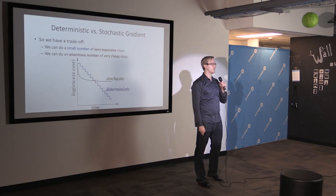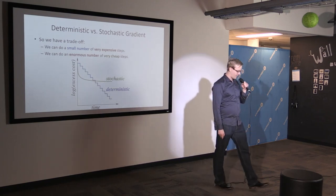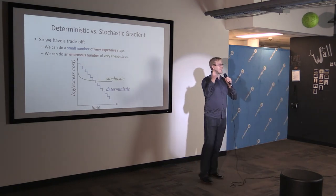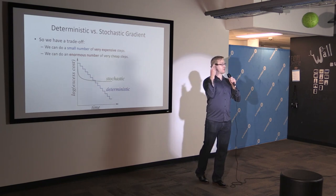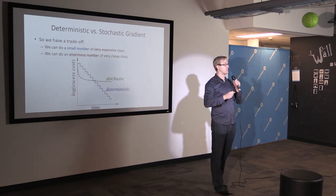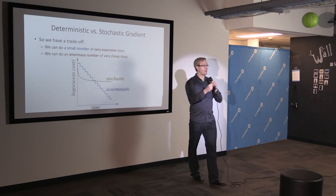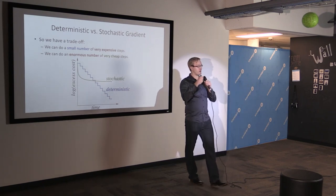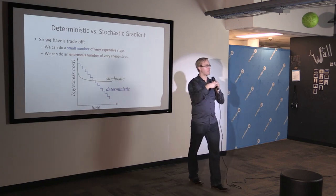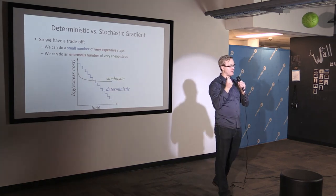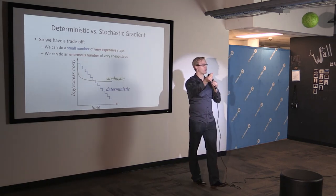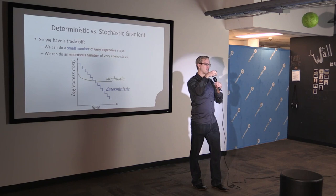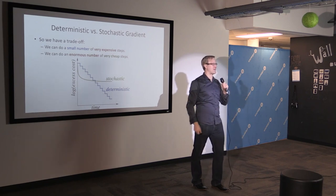Why does stochastic gradient slow down? When you have a really bad guess, almost any random training example gives you a good direction. As you get better, that one random example is a worse approximation of the direction you need. The key is you need the variance between your different gradients to go down to zero. If it doesn't, you need to make the step size go to zero, so stochastic gradient starts taking tiny tiny steps.